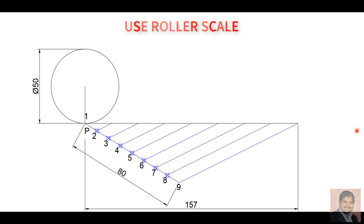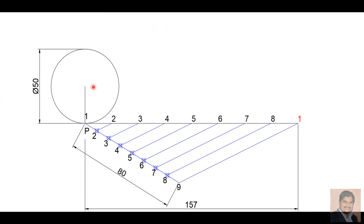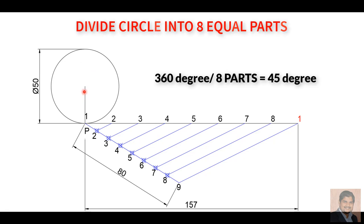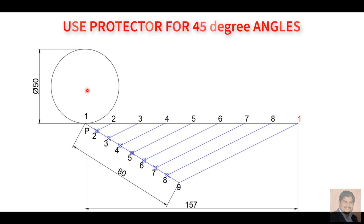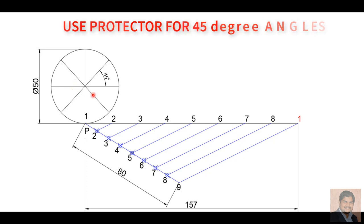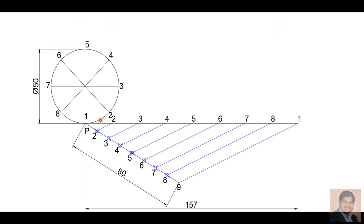I am numbering the divisions 0, 1, 2, 3, 4, 5, 6, 7, 8. The last point is also labeled 1 because after one revolution point 1 returns to its initial position. To divide the circle into 8 equal parts: 360 degrees divided by 8 gives 45 degrees per part. Using a protractor, I can divide the circle into 8 equal parts of 45 degrees each.